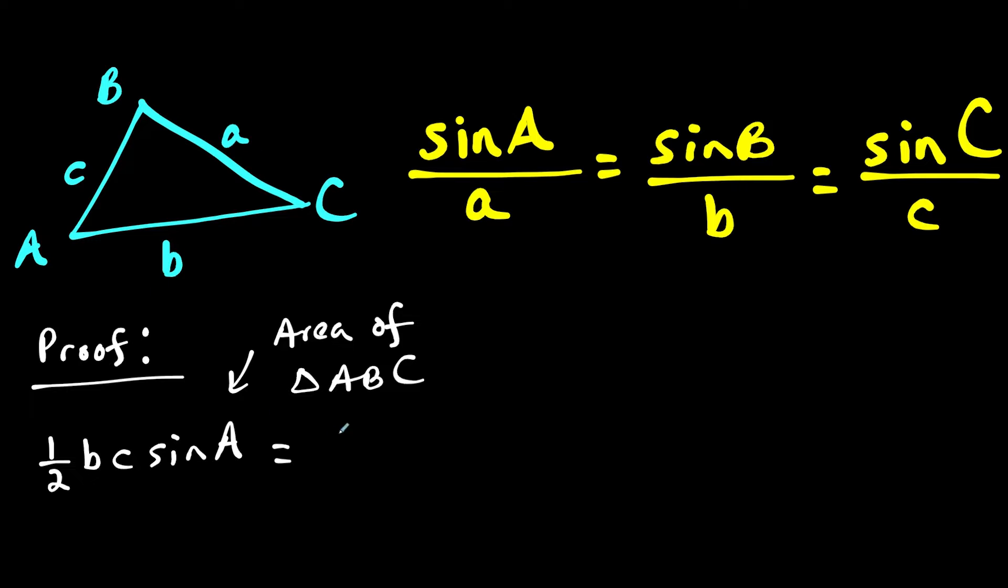But what if I use sides A and C? Then I would have one half A times C, and the angle between them is angle B, so we could say sine of angle B. This is another way of finding the area of the triangle, and the area of the triangle does not change, so these two are definitely equal to each other.